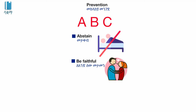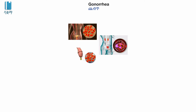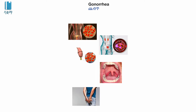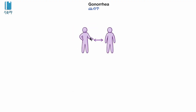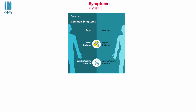Prevention methods include the use of condoms. Gonorrhea is an important sexually transmitted disease. It is caused by bacteria that infects the vagina, penis, and rectum. This bacterium spreads through sexual intercourse. Symptoms include a burning sensation during urination.